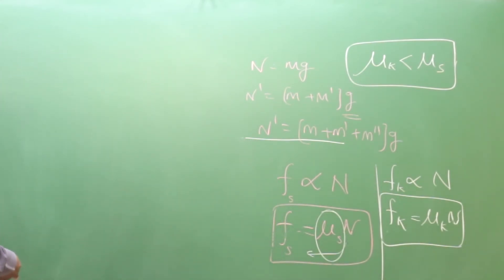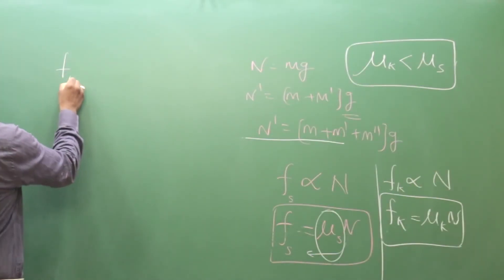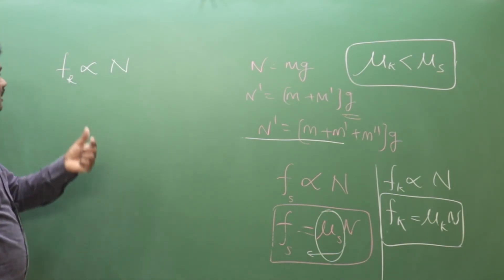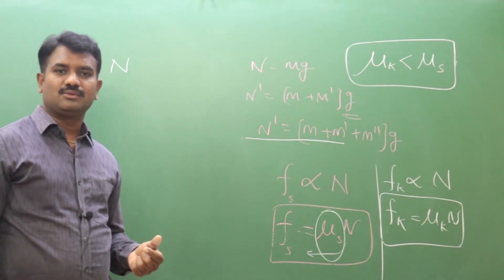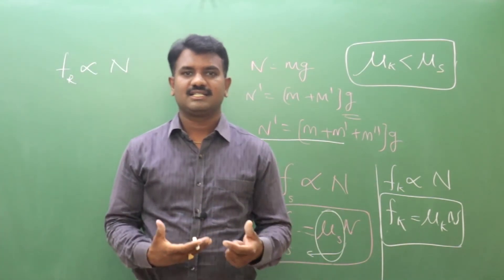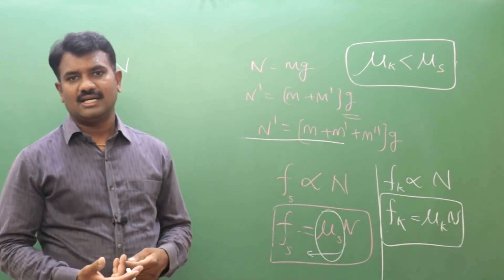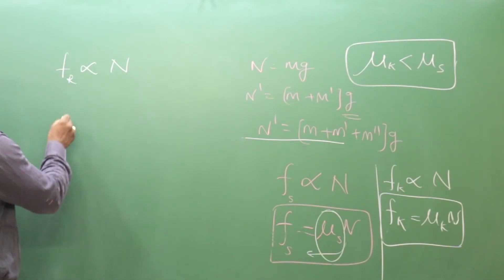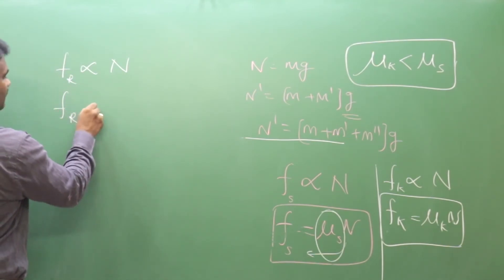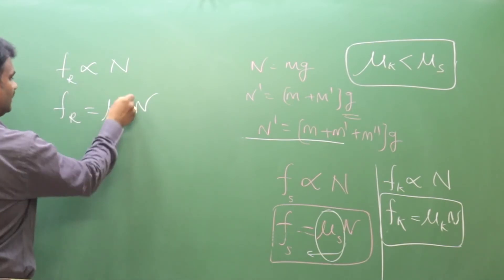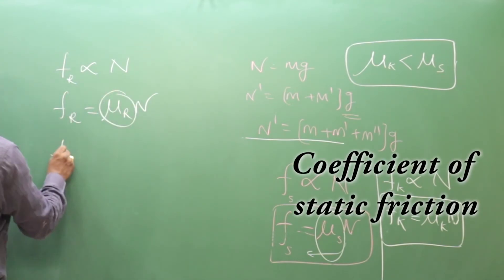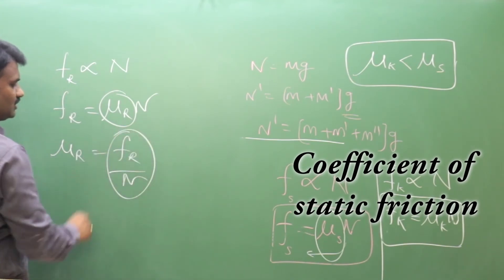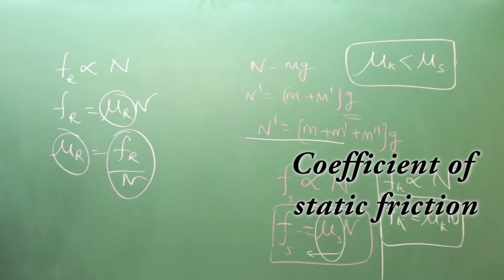Rolling friction also depends upon the normal reaction. As the normal reaction increases, rolling friction increases — that is why it is not easy to push a heavier car than a lighter one. So rolling friction fr is proportional to normal reaction, and introducing a constant: fr equals mu-r times N, where mu-r is the coefficient of rolling friction. Mu-r equals fr divided by N, and since it is a ratio, mu-r is also dimensionless.